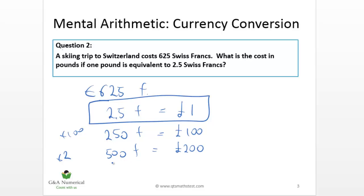So we're getting closer, 500 francs is 200 pounds. How short are we? We're 125 francs short. But we can infer what that is because 250 francs is 100 pounds. And 125 francs is just half as much. So the remaining 125 francs, which we need, must be equal to 50 pounds.